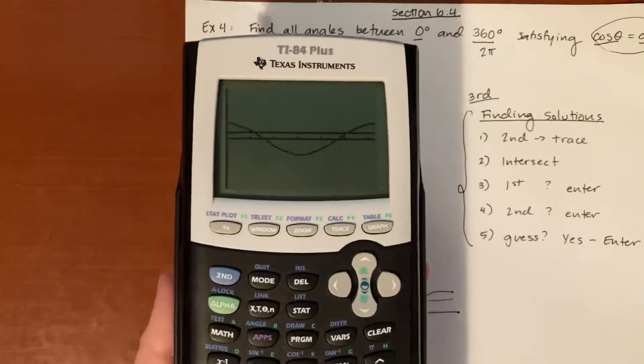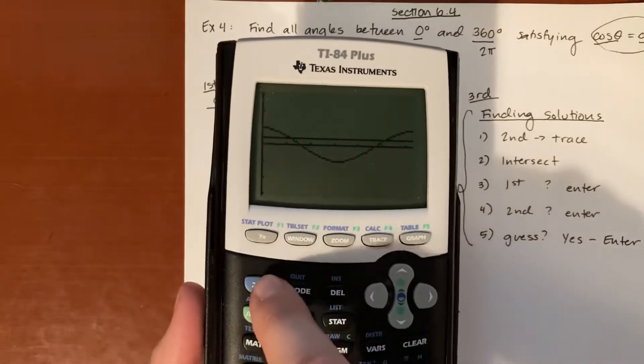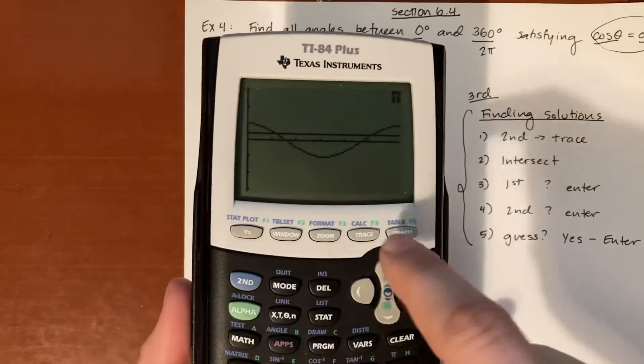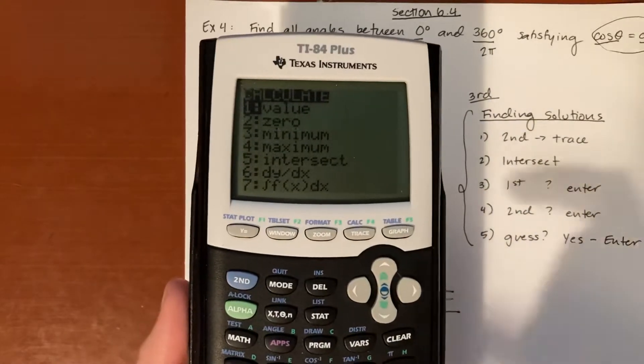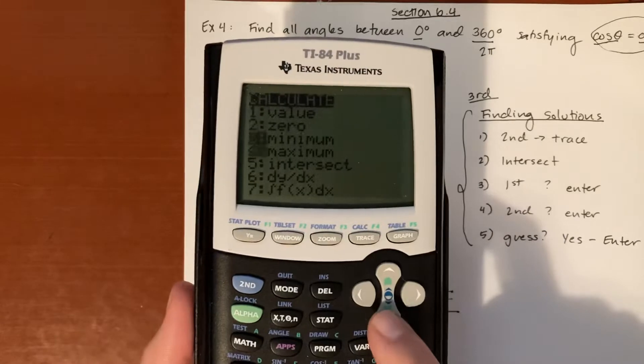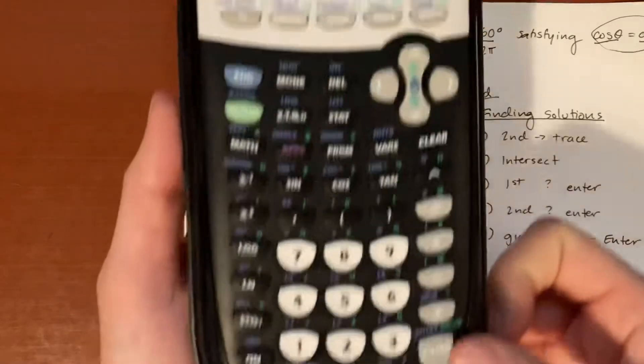So finding that, let's go ahead and do that. We're going to go ahead and hit second trace, so second is right there, the blue button, second and trace. I'm going to go down to intersect, or you could click five, hit enter.